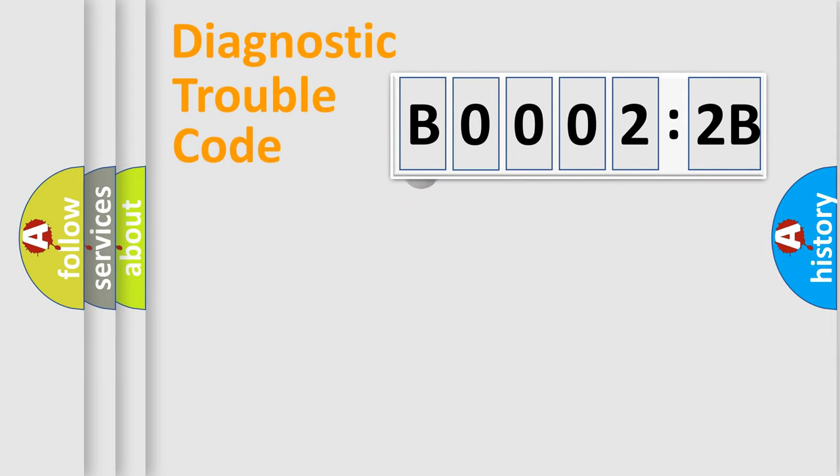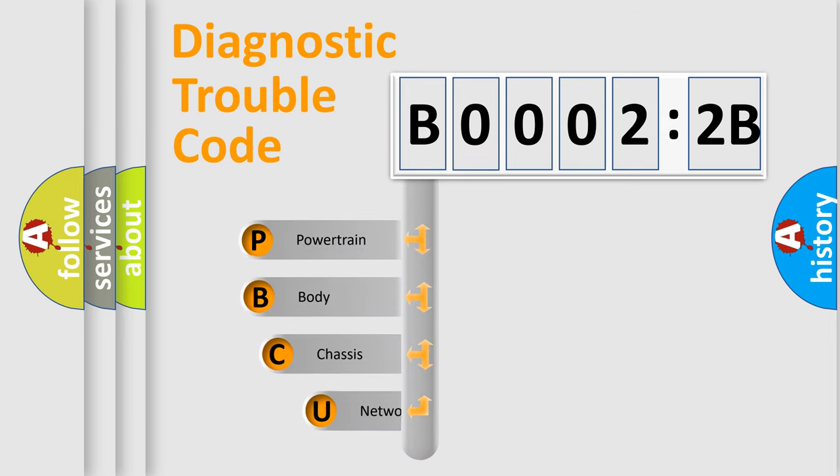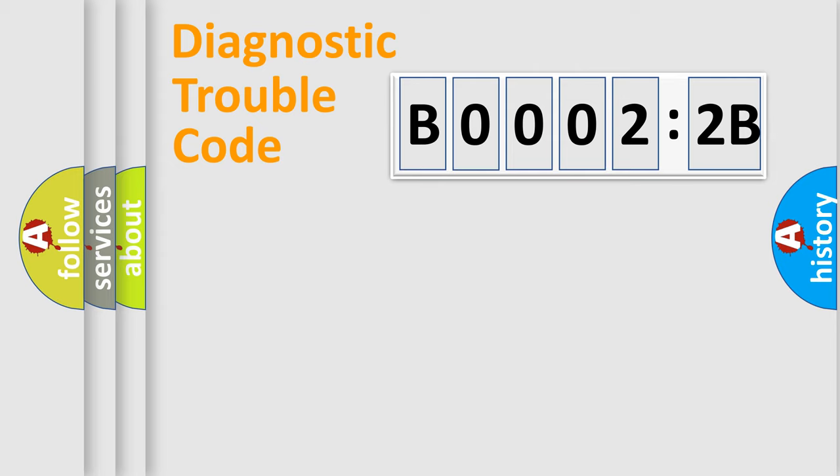First, let's look at the history of diagnostic fault code composition according to the OBD2 protocol, which is unified for all automakers since 2000. We divide the electric system of automobile into four basic units: Powertrain, Body, Chassis, and Network.